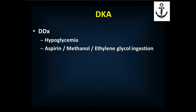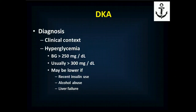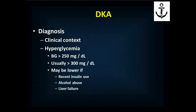Your differential diagnosis includes hypoglycemia or overdose on aspirin, methanol, or ethylene glycol — the primary ingredient in antifreeze. If by history you can rule those out, and a finger stick blood glucose rules out low blood sugar, then in a diabetic with those symptoms you have a good idea this is hyperglycemia — and the finger stick blood glucose confirms it. Diagnosis is made in the context of an insulin-dependent diabetic with blood sugar above 250 mg/dL, typically above 300 mg/dL. They can give themselves insulin and push the blood sugar down, but the acidosis remains. Alcohol abuse or liver failure may also lower the sugar because they lack the glycogen stores to help push it back up.